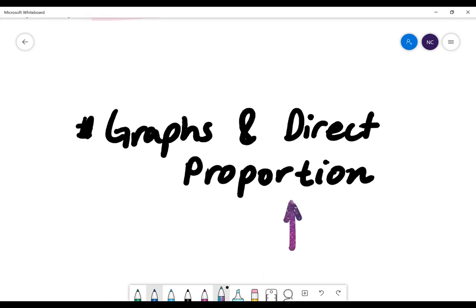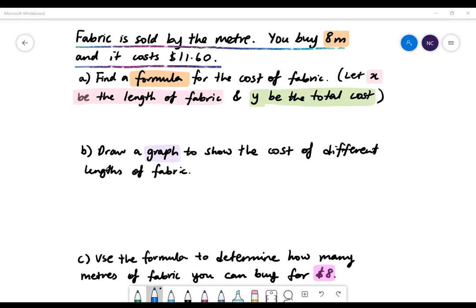Today, we're going to be looking at graphs and direct proportion. Here is our first example. Fabric is sold by the metre. You buy 8 metres and it costs $11.60.